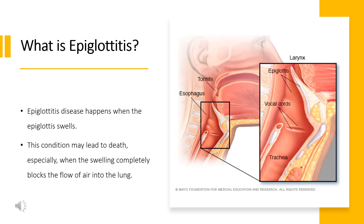What is epiglottitis? The epiglottis is a small, movable lid just above the larynx that prevents food and drink from entering the windpipe. Here is its exact position. Epiglottitis happens when the epiglottis swells. This condition may lead to death, especially when the swelling completely blocks the flow of air into the lungs.